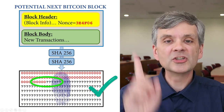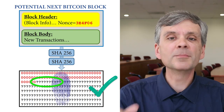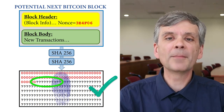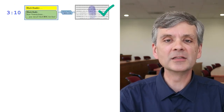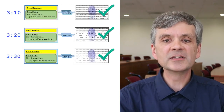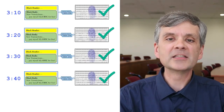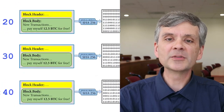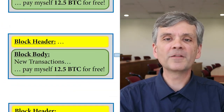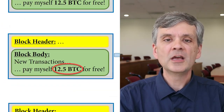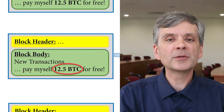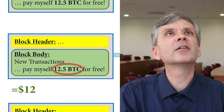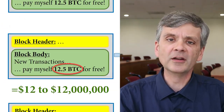The difficulty can be adjusted up or down to make it such that about every 10 minutes, someone somewhere finds a match, earning themselves 12.5 Bitcoins, which is worth somewhere between $12 and $12 million.